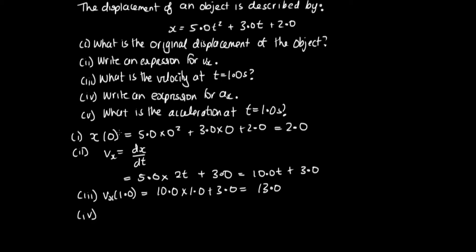Part 4: write an expression for a_x. We know that a_x = dv_x/dt, so we differentiate our expression for v_x. Differentiating 10t gives 10, and differentiating the constant 3 gives 0. So our acceleration expression is a_x = 10.